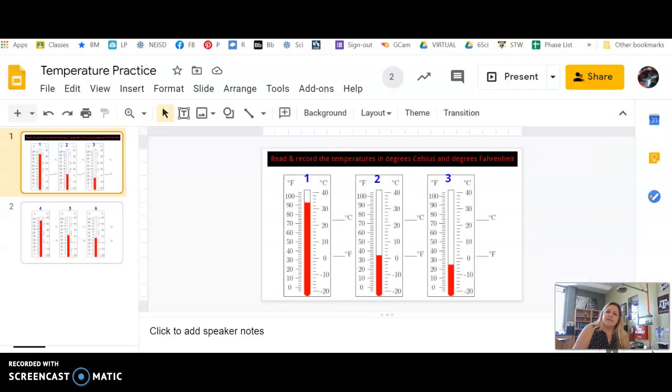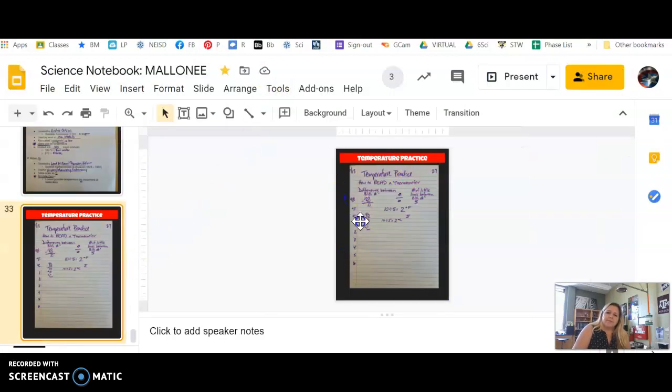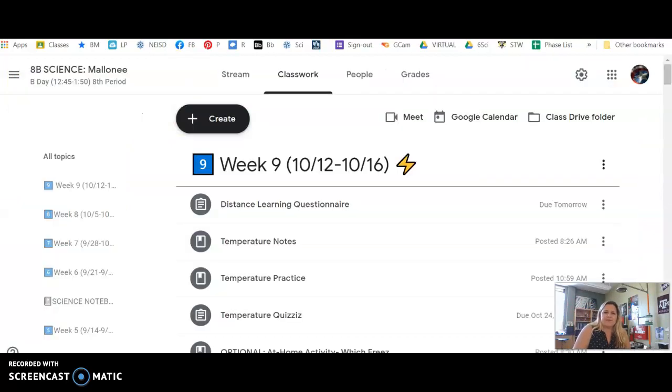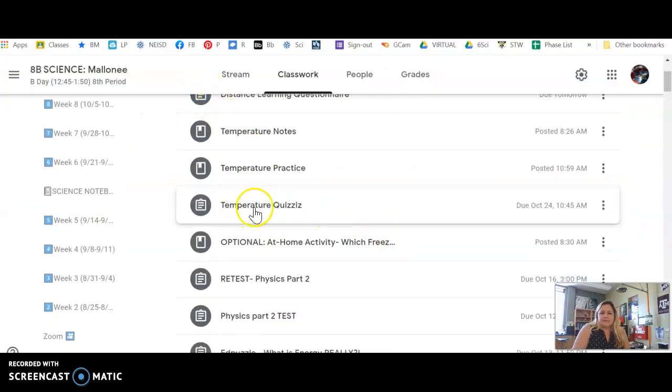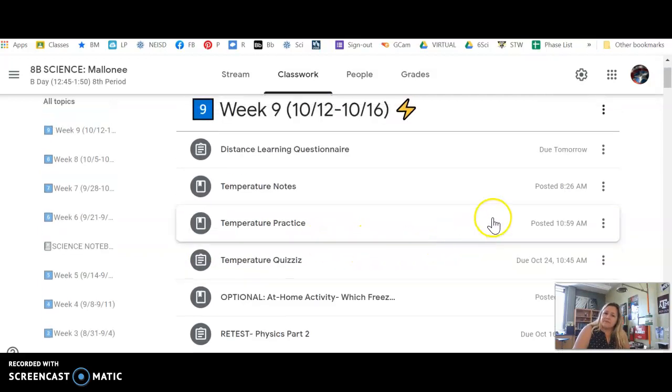But go ahead and practice on these six and write your answers in your science notebook. So you have two measurements, one Fahrenheit, one Celsius, on each of them. I'll post the key for you to check it. So you've got temperature quizzes that you can practice with. And then this is obviously optional. If you have any questions, feel free to come to tutoring. The schedule and the time and the Zoom links are all in classroom. Thanks, guys.